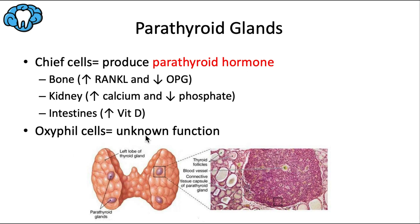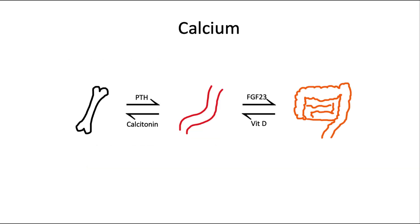The oxyphil cells have no known function. Parathyroid hormone has a few different effects on various tissues. For bone, PTH binds to osteoblasts to increase RANK ligand and decrease osteoprotegerin, which activates osteoclasts that destroy bone. At the kidneys, PTH increases calcium reabsorption at the distal tubule and collecting duct and inhibits phosphate reabsorption. At the intestines, PTH activates vitamin D, which promotes calcium absorption.